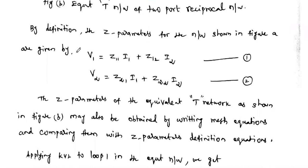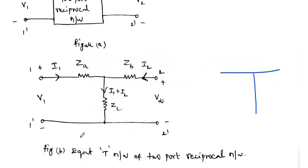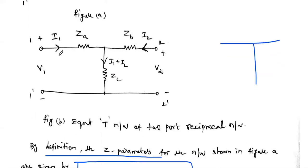First we have to write down the Z-parameter equations. What is the Z-parameter equation? V1 = Z11·I1 + Z12·I2. Similarly, the output voltage V2 = Z21·I1 + Z22·I2. These two equations are called Z-parameter equations. Then the Z-parameter of the equivalent T network is shown in the figure. For this figure, we are going to write the KVL equation for the input loop and output loop separately to get two more equations.